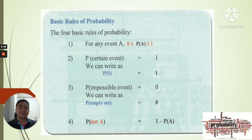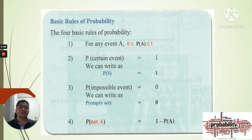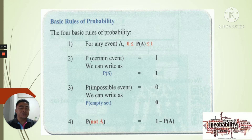Second: the probability of a certain event equals 1. We can write it as P(S) equals 1, where S is the sample space. The sample space is the whole thing, so the probability of the sample space is 1. Third: the probability of an impossible event — written as an empty set — is 0. So the probability of any event which is impossible is 0.